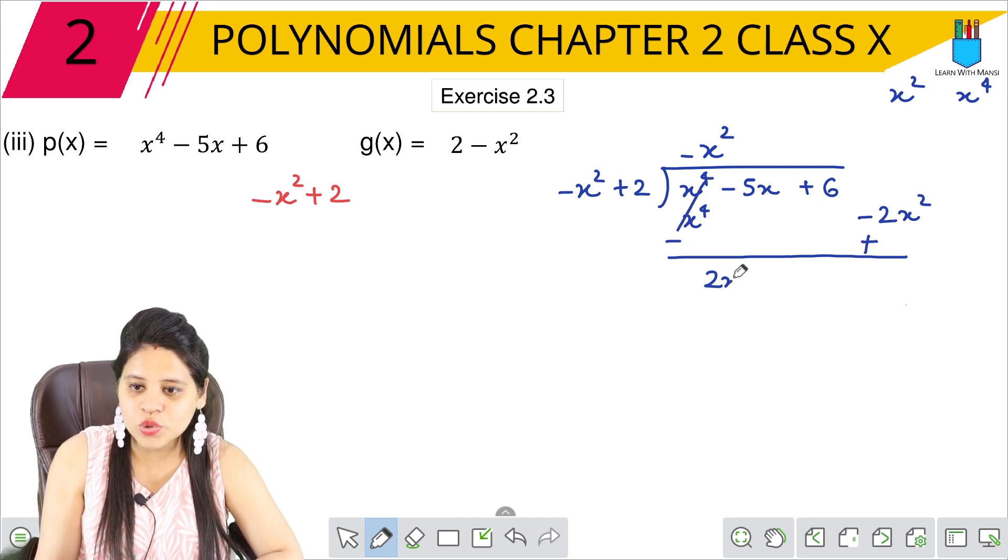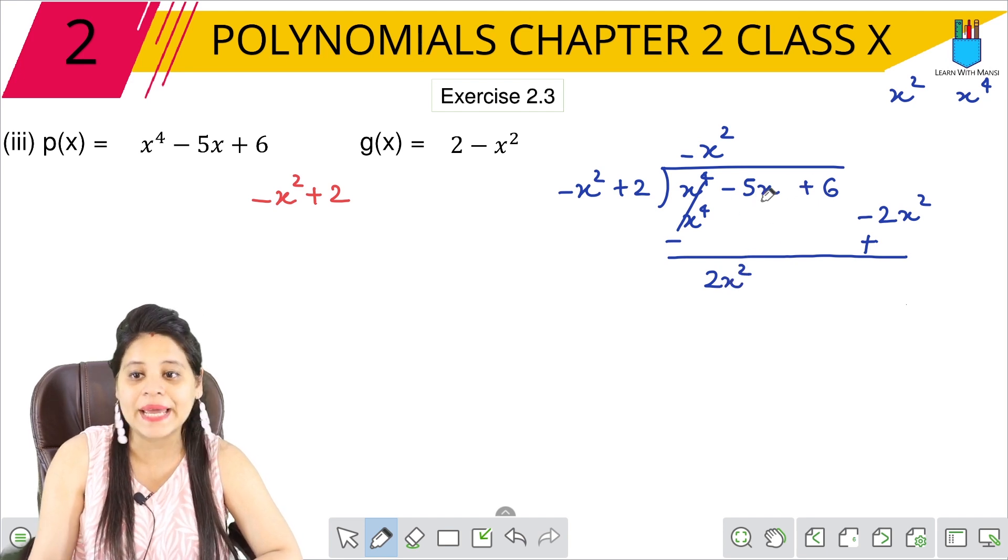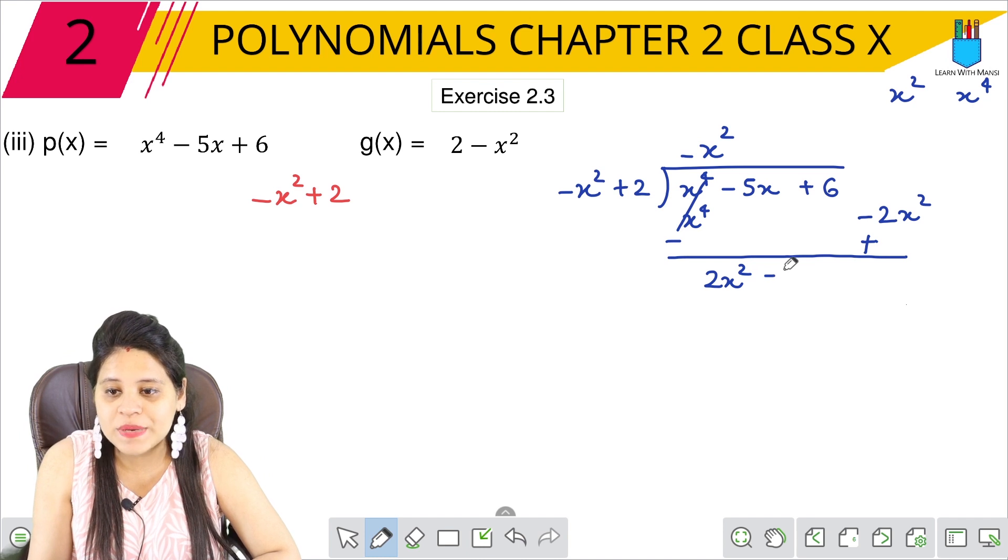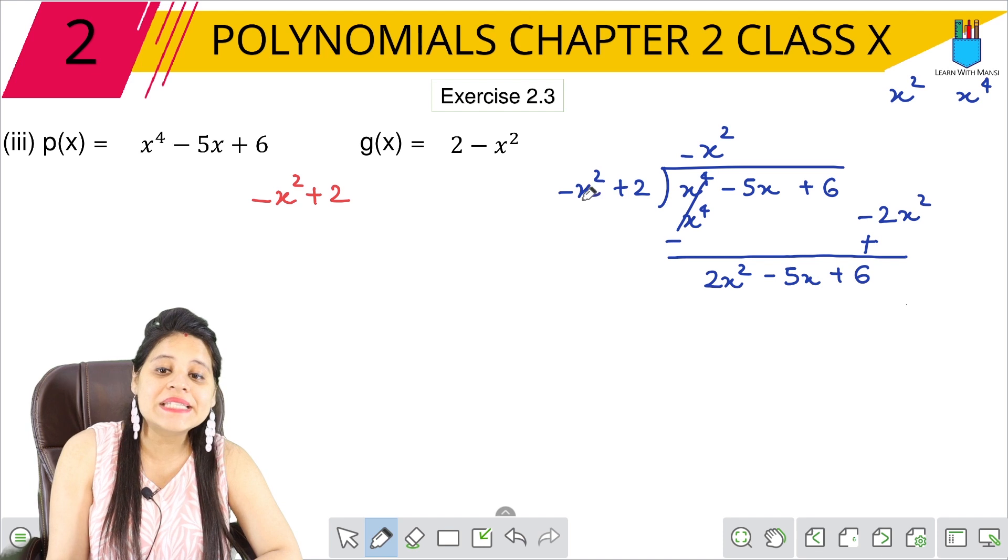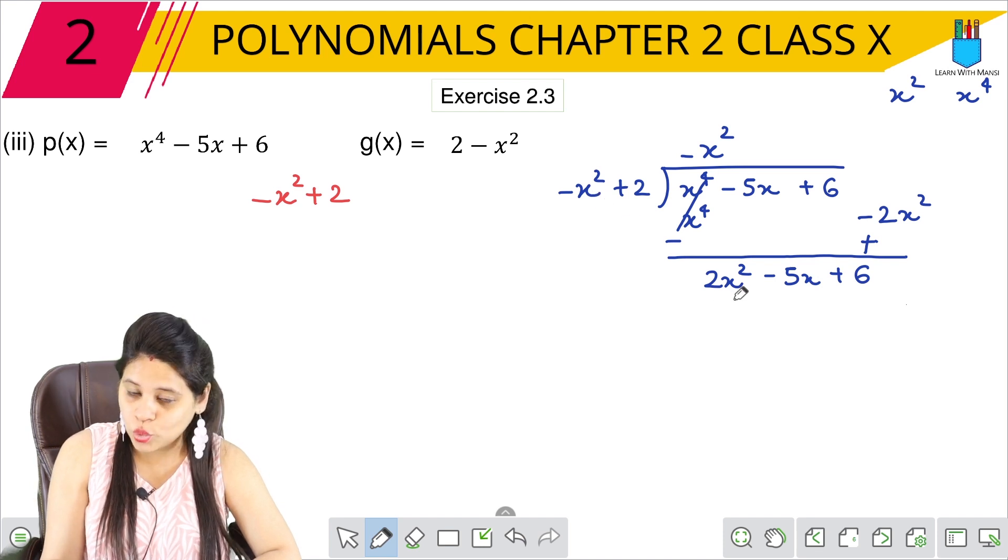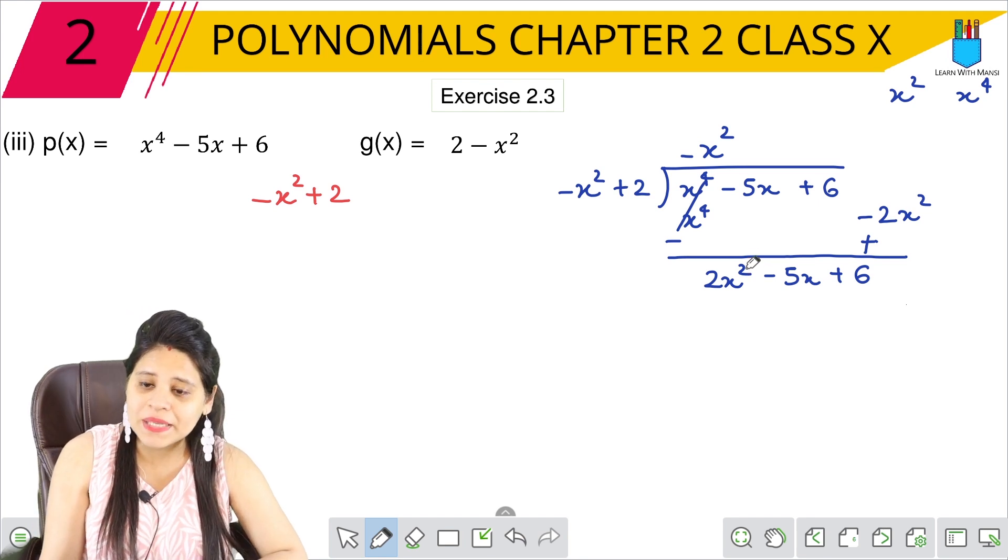This is positive. So we have to take it to the power of 2x square, because here it is x, so x square will come. So we have to take it to our left: minus 5x plus 6. Next, we will take x square and 2x square, so we have to multiply by 2x square.